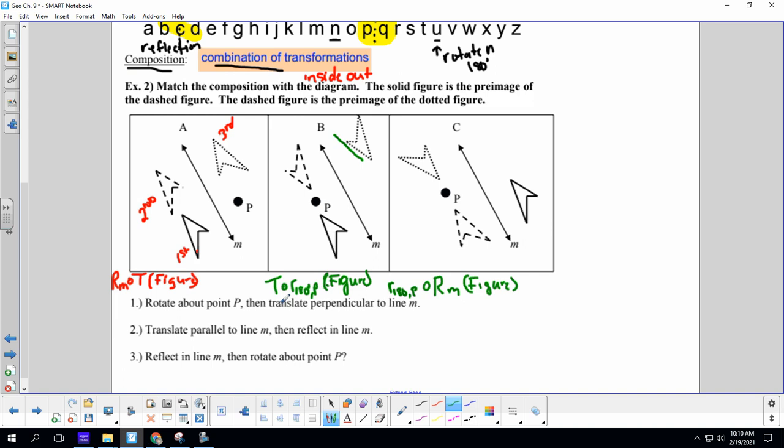So we look at our compositions as the transformation that goes first happens closest to the figure, and the transformation that goes next is on the outside. So it's like going from the inside out. So which one had the rotation about point P and then a translation perpendicular to line M? Oh, yep, this one. It was B. Translate parallel to line M and then a reflection across line M. Oh, that is A. And then reflection in line M, it's going to be C.